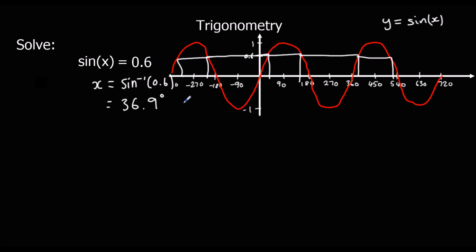We've got one answer from the calculator and we need to generate more. We use knowledge of the graph. We only need to look at the first 360 degrees, because this wave repeats every 360 degrees. If we find the two answers within the first 360 degrees, we can just add 360 or take 360 off to generate more answers.